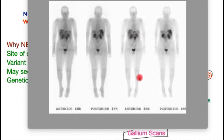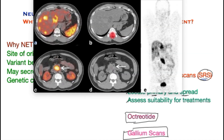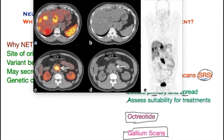A further refinement is the gallium scan, which utilizes the latest techniques to pick up tumors and superimpose them on a CT scan. Here you can see the primary tumor in the pancreas with spread to the liver, clearly shown on the CT scan — the primary tumor and multiple spots in the liver — confirming that this is a neuroendocrine tumor.